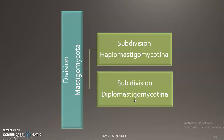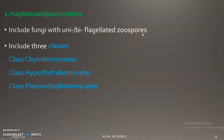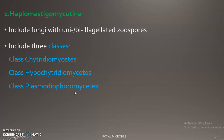Division Mastigomycota is again subdivided into Haplomastigo mycotina and Diplomastigo mycotina — note the subdivision ending is -mycotina. Haplomastigo mycotina includes fungi with single or biflagellated zoospores. Zoospores are motile spores. This subdivision includes three classes: Class Chytridiomycetes, Class Hypochytridiomycetes, and Class Plasmodiophoromycetes.